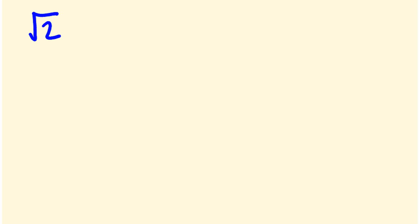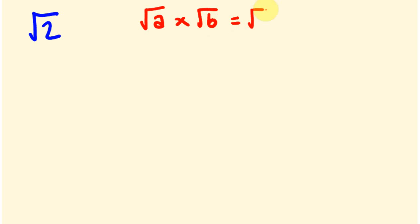The other thing we looked at in previous videos was how to multiply surds, where we found the rule: the square root of A times the square root of B is equal to the square root of A times B. An example of this is the square root of 2 times the square root of 3 equals the square root of 6.